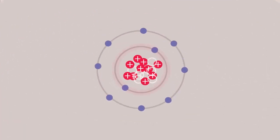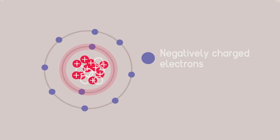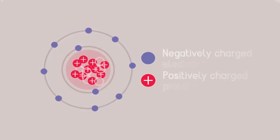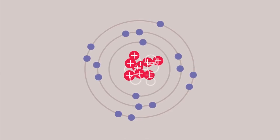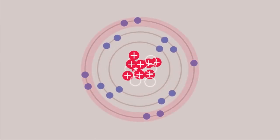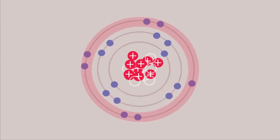In an atom, the inner complete shells of negatively charged electrons are held tightly by the positively charged protons in the nucleus. However, these inner electrons will shield some of this nuclear charge from the electrons in the outer shell, which will only feel this excess charge.